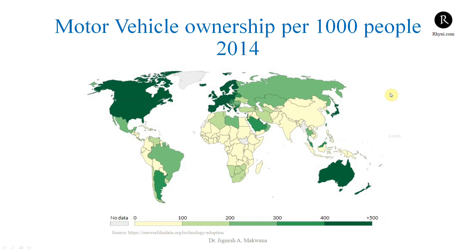This graph shows motor vehicle ownership per 1,000 people — data from 2014 — the per capita motor vehicle ownership for the world. The color code: light yellow shows 0 to 100, meaning for every 1,000 people, 0 to 100 vehicles — about 10%. Dark green shows greater than 500. You can see the US, European countries, and Australia have high motor vehicle ownership per 1,000 people, meaning per capita vehicle numbers are much higher in those countries — greater than 50%.